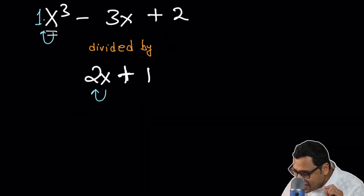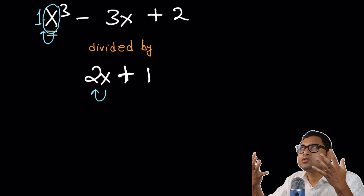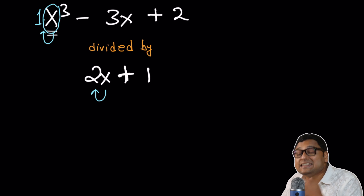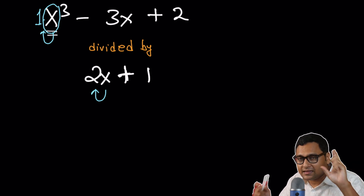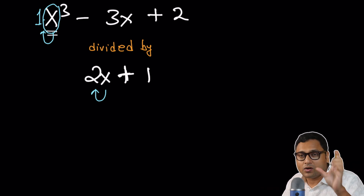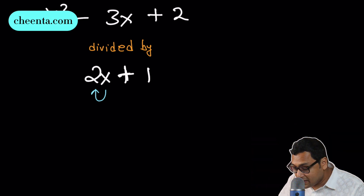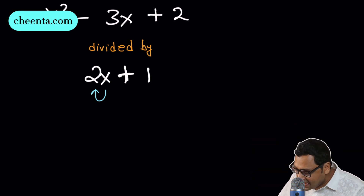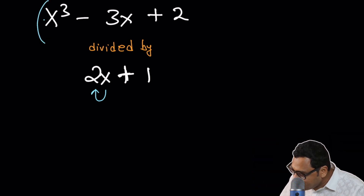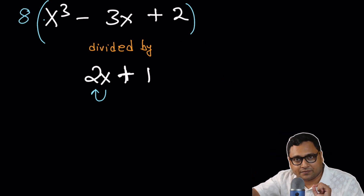So instead of x, I want 2x whole cube, which is 8x³. I want the coefficient of the highest power of the dividend to be 8, which makes the division much simpler. So I will multiply the dividend by 8 and then try to divide it.